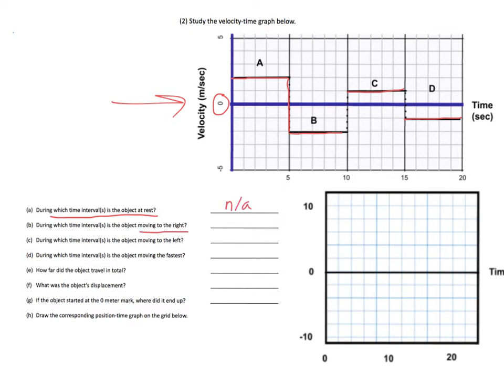When is it moving to the right? Typically, we think of moving to the right as when it has a positive velocity. So it has a positive velocity during the A region, which includes 0 to 5 seconds. It has a positive velocity during C, which is from 10 to 15 seconds.